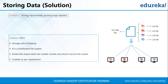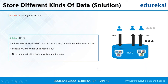The next problem was storing a variety of data, and that was also addressed by HDFS. With HDFS you can store all kinds of data — whether structured, semi-structured, or unstructured — because in HDFS there is no pre-dumping schema validation. You can just dump all kinds of data in one place. It also follows a write-once and read-many model, so you can write the data once and read it multiple times for finding insights. The third challenge was accessing the data faster, which is one of the major challenges with big data. The solution is moving processing to data rather than data to processing.